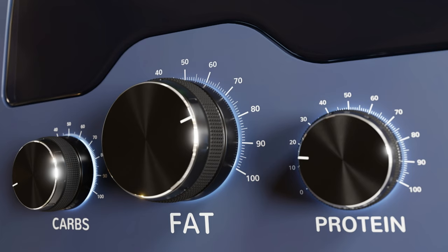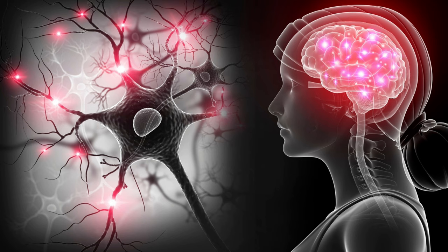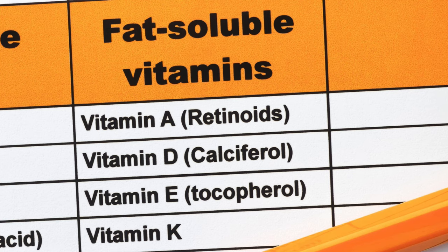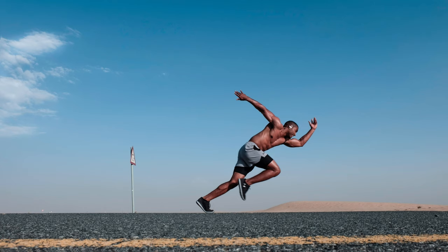Fats and oils, also known as lipids, are one of the three macronutrients necessary in human nutrition. Fats are very important to the nervous system and also help the body use fat-soluble vitamins A, D, E, and K. Fats are also important in the manufacture of steroid and sex hormones.